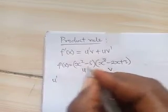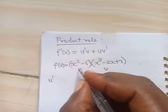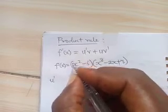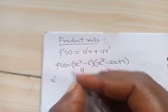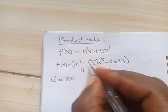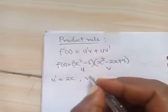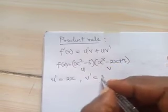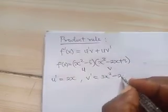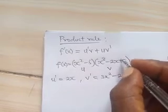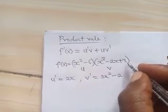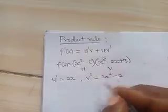u prime means differentiate u. Differentiating (x squared minus 5) gives us 2x, since the constant differentiates to zero. To differentiate v, we get 3x squared minus 2, because: 3 times x to the power 3 minus 1 gives 3x squared, differentiating 2x gives 2, and the constant 3 differentiates to zero.